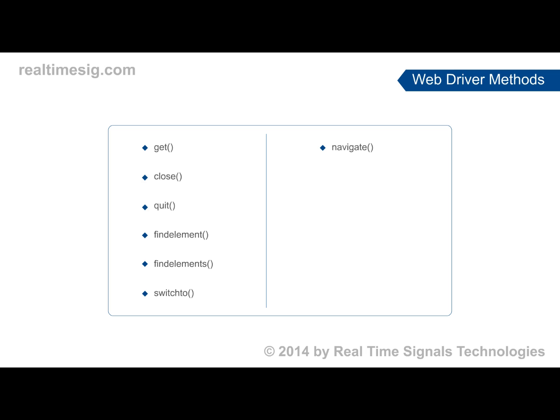SwitchTo is used for switching between interfaces, popups, or alerts. Navigate is used for navigating between browsers or pages in the current browser. GetTitle, GetCurrentURL, and PageSource are used for getting useful information from the current loaded page. GetWindowHandle is used for returning the handle ID for the current browser.